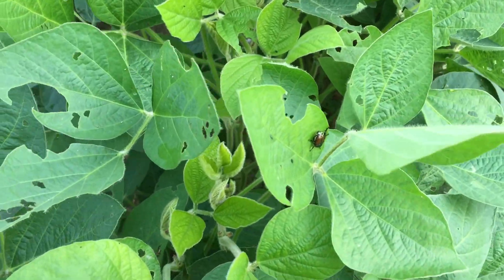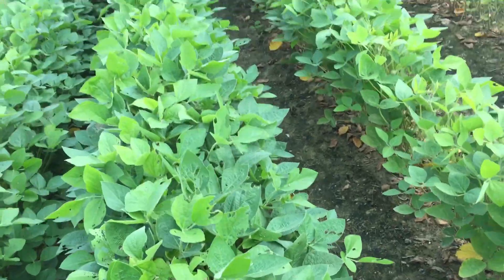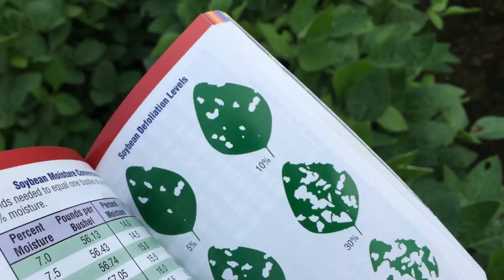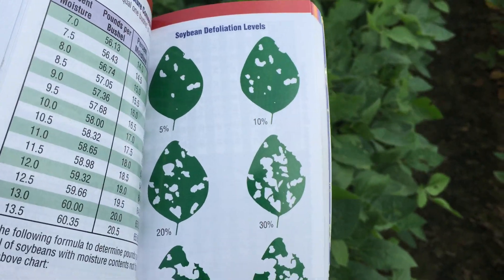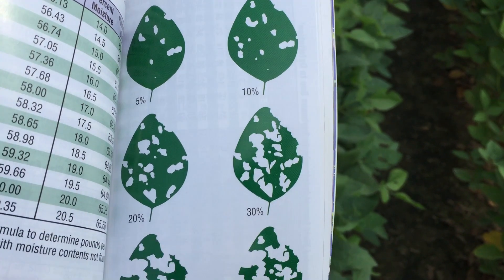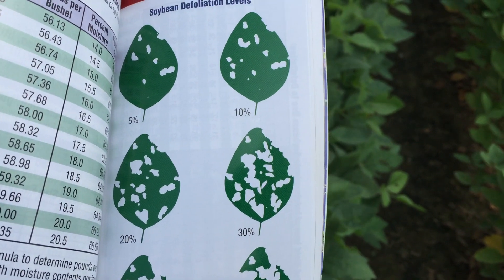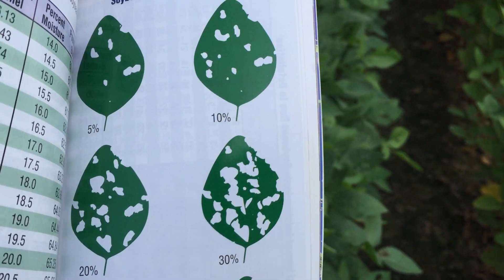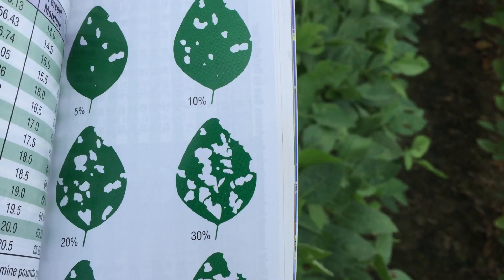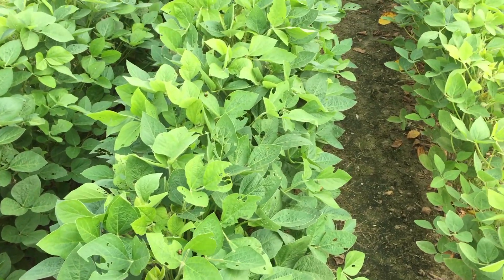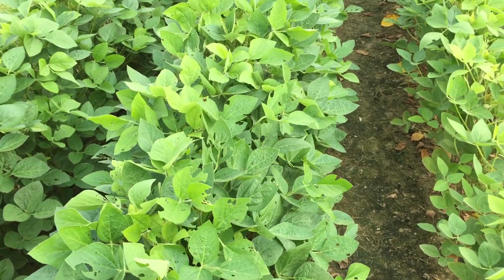The next decision to make as we apply this fungicide: as we look here, we've got some Japanese beetle feeding. We want to make a determination of when to spray. At the R3 stage, if you look at the Purdue handbook, the threshold is 15% defoliation across the plant — you can see a 10 versus a 20. We see that easily sometimes in the top leaves from insect feeding, but not necessarily through the whole plant. We do have some PFR proven insecticides to consider at this stage as well.